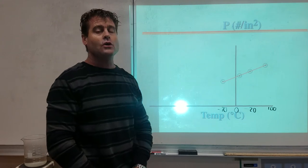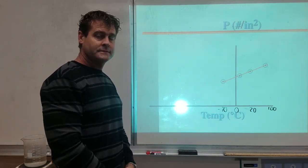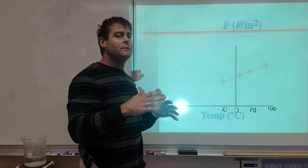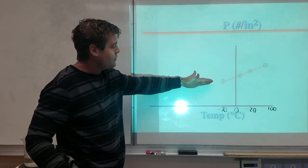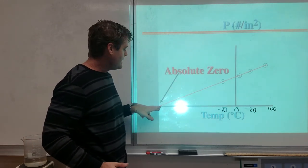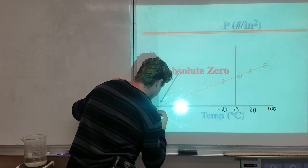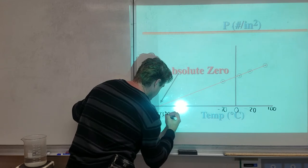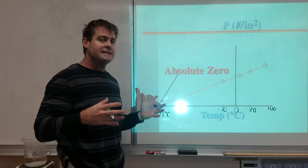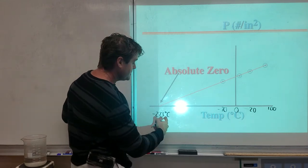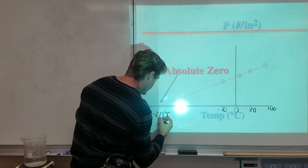To find the lowest possible temperature, we extrapolate the pressure-temperature graph down until the pressure reaches zero. That corresponding temperature is called absolute zero. Absolute zero is -273°C — the coldest possible temperature, the point at which all molecular motion stops.